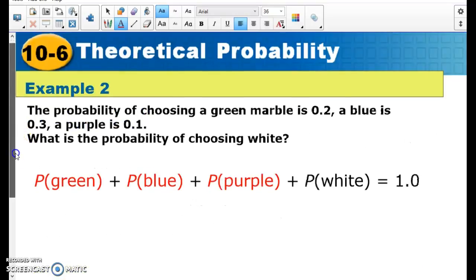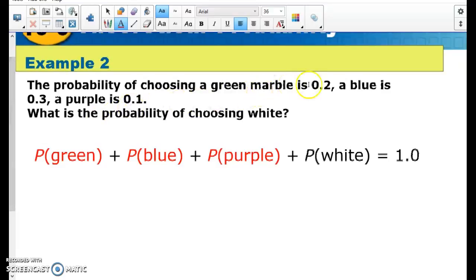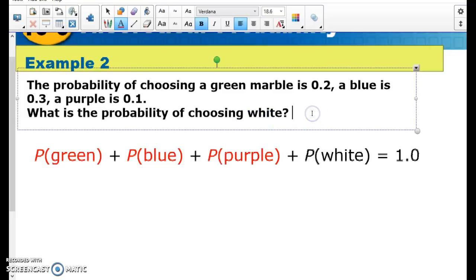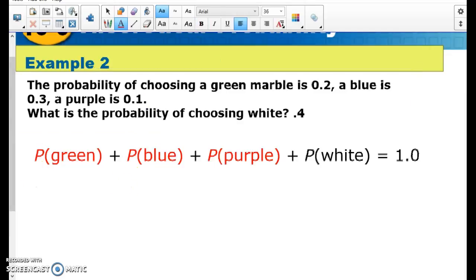Something like this: if the probability of choosing a green marble is 0.2, blue is 0.3, and purple is 0.1, what's the probability of choosing a white marble? Again, all of these need to add up to one. So 0.2 plus 0.3 plus 0.1 is 0.6. So that means there's a 0.4 chance of choosing a white marble.